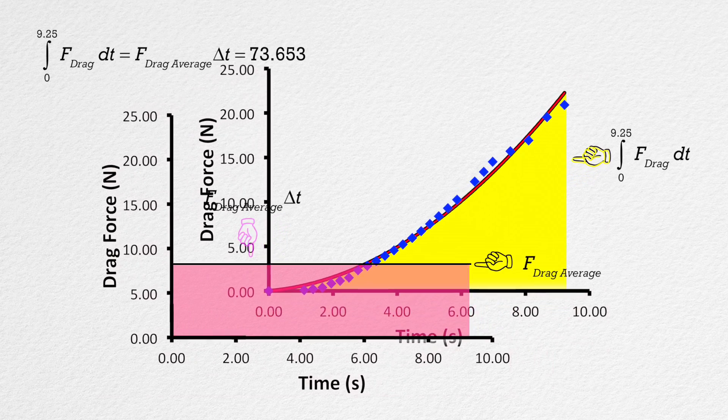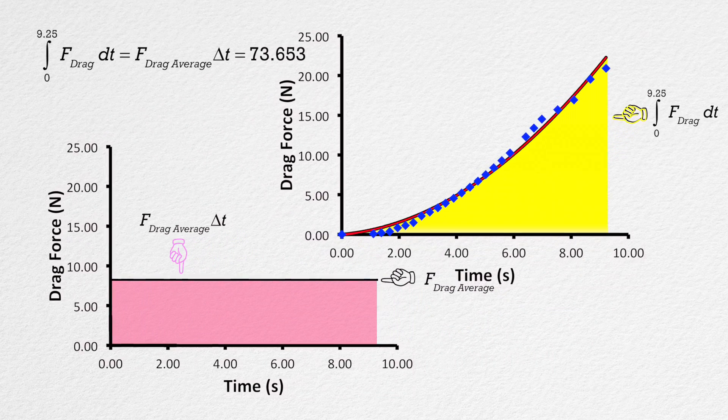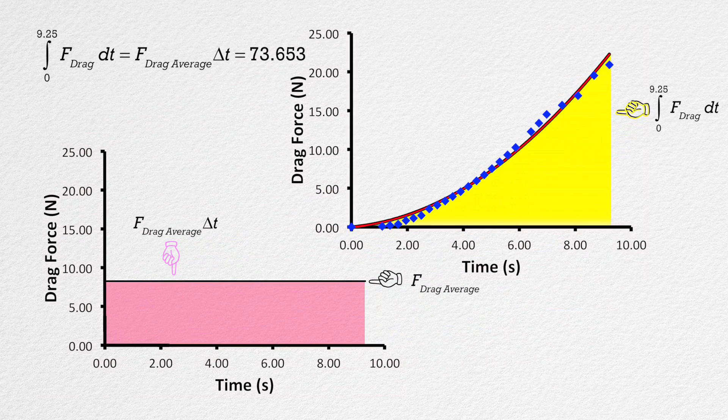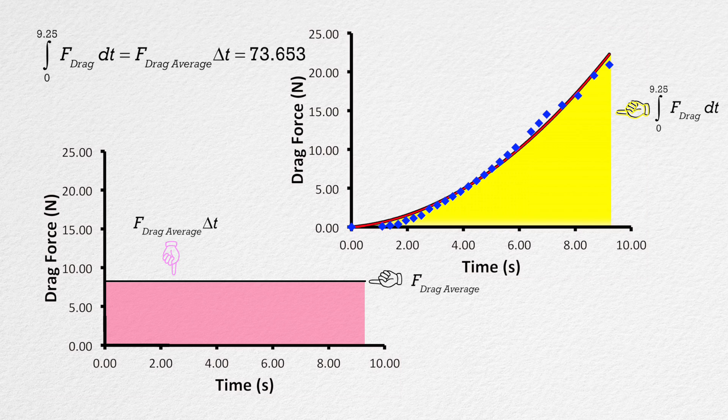I'll say that again because it is very important. The rectangular area in pink created by the average force times the total change in time has the same area, 73.653 newton seconds, as the yellow area between the curve and the time axis, which is the definite integral of the force of drag with respect to time.